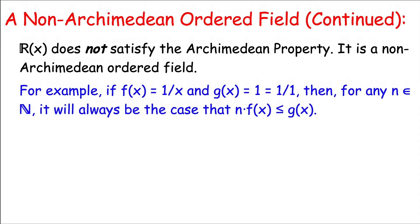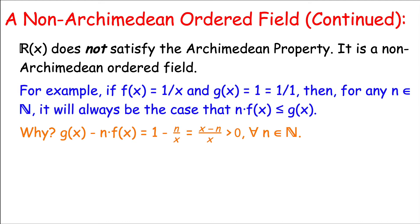Here's one example confirming this. Let f(x) be the rational function 1/x and g(x) be the constant rational function 1/1. Both are positive rational functions under our ordering. However, for any natural number n, n times f(x) will always be less than or equal to g(x). To see why: compute g(x) minus n times f(x), which simplifies to (x minus n)/x. The leading coefficient of both numerator and denominator are positive, making this a positive rational function — so n times f(x) is less than g(x) no matter what n is.